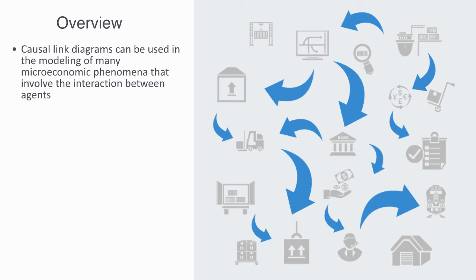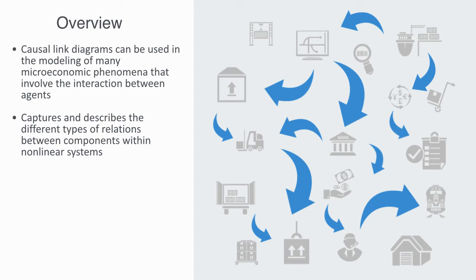The model of causal links and feedback loops is fundamental to understanding the dynamics of complex systems as they capture and describe the basic types of relations between components within nonlinear systems. Causal links and feedback loops are one of the best examples of the key premise within complexity theory.